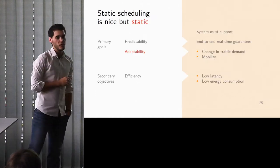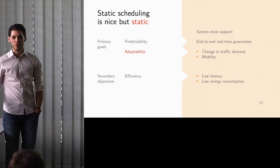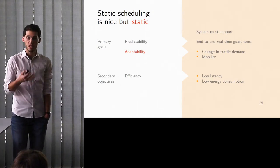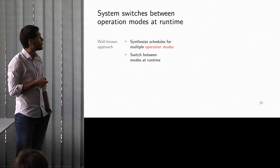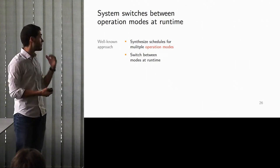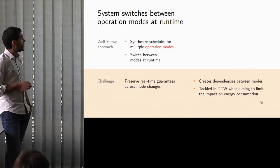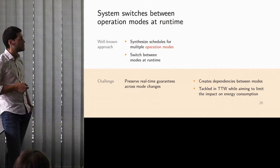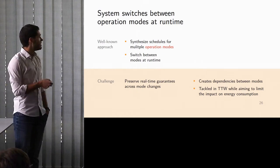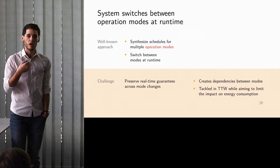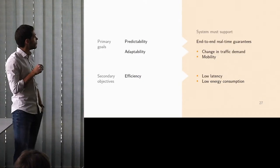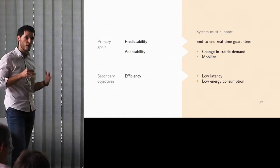So that gives us the predictability. However, the downside of a static schedule is that everything is static, right? However, in the literature, there have been solutions proposed to deal or mitigate this limitation, which typically is to use multiple operation modes. So the idea is that the same system will have different tables and they'll switch between the different tables at runtime. In our case, what we were interested in is to try to do this multimode case while being able to still meet deadlines across the mode changes. This can be done in slightly different ways. And in TTW, we have tried to make this in order to limit the impact of the mode changes on the energy consumption for communication.